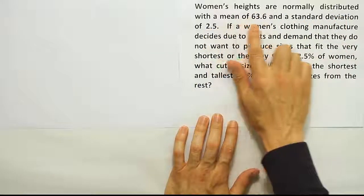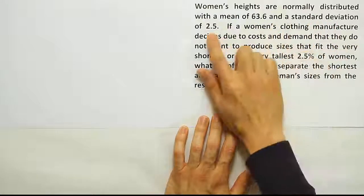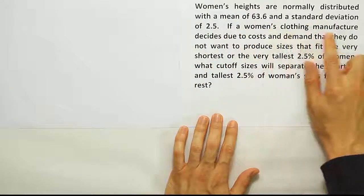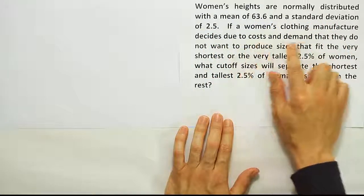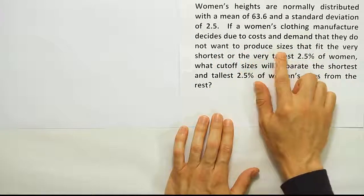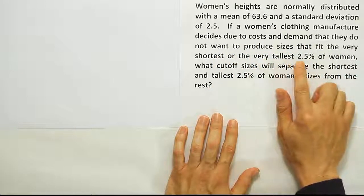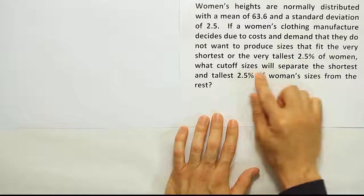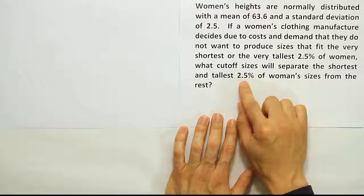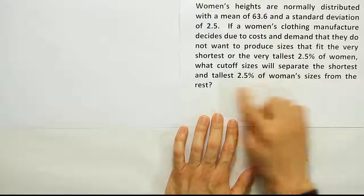Women's heights are normally distributed with a mean of 63.6 and a standard deviation of 2.5. If a woman's clothing manufacturer decides, due to cost and demand, that they do not want to produce sizes that fit the very shortest or the very tallest 2.5% of women, what cutoff sizes will separate the shortest and tallest 2.5% of women's sizes from the rest?